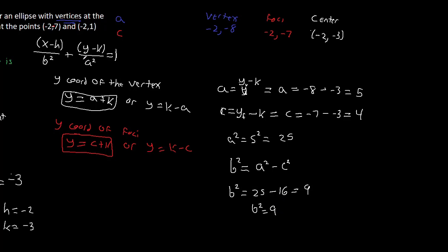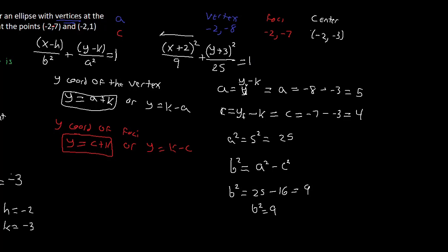Now we have everything we need. H = −2 means the x-term becomes (x + 2)², over b² = 9. K = −3 means the y-term becomes (y + 3)², over a² = 25. So the standard equation is: (x + 2)²/9 + (y + 3)²/25 = 1. That is the standard equation of this ellipse, which is not centered at the origin.